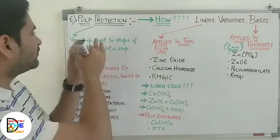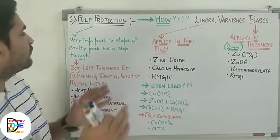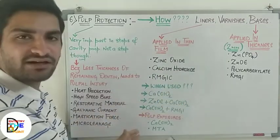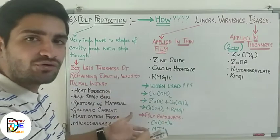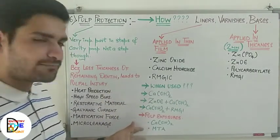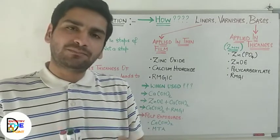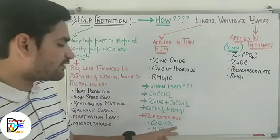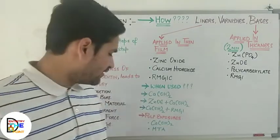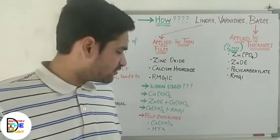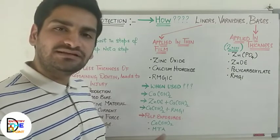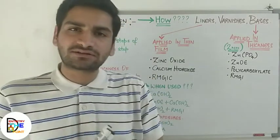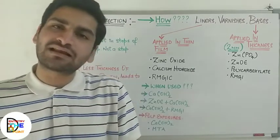These were the basic considerations for pulp protection. You need to remember why pulp protection is necessary, what the causes are, what materials can be used and why they are used. Regarding pulp exposures — whenever there is a microscopic or pinpoint exposure of the pulp, you perform direct pulp capping. One more material, MTA (mineral trioxide aggregate), can also be used as a base or liner to initiate the formation of reparative dentine. That was all about pulp protection. Next, we will move on to secondary resistance and retention form.